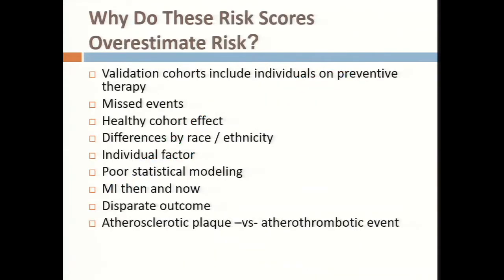We immediately asked why these scores weren't working well. Maybe the validation cohort MESA was not representative of the target population. Maybe everyone in MESA was highly medicated, taking aspirin and statin. Maybe we missed events, or subjects who enrolled were healthier than average Americans. Maybe the score didn't work well by different races, or didn't work well in people with hypertension. Or maybe the statistical methods used to build it weren't very good.